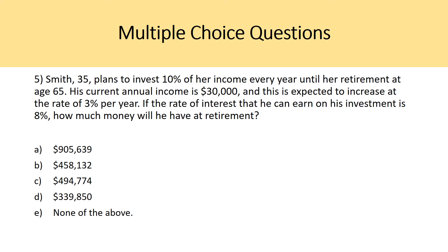Question five: Smith, age 35, plans to invest 10% of income every year until retirement at age 65. Current annual income is $30,000, expected to increase at 3% per year. If the rate of interest on investments is 8%, how much money will he have at retirement? This uses concepts from chapter two — the growing annuity — applied alongside the formula from this chapter: existing savings plus future savings times the rate of return. It's quite challenging as it combines future value and present value concepts from the last video.